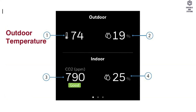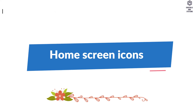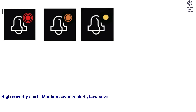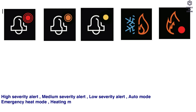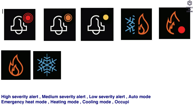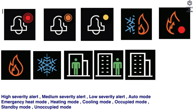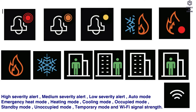The ambiance page displays: 1 — outdoor temperature, 2 — outdoor humidity, 3 — indoor CO2 level, 4 — indoor humidity. Home screen icons include: high severity alert, medium severity alert, low severity alert, auto mode, emergency heat mode, heating mode, cooling mode, occupied mode, standby mode, unoccupied mode, temporary mode, and Wi-Fi signal strength.